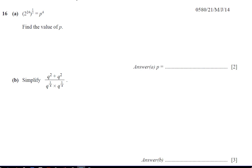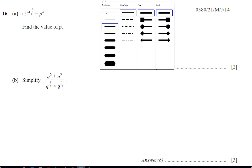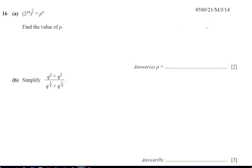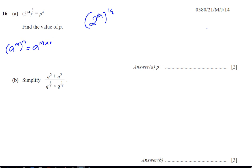First of all, let's just take the 2 to the power of 24 part. 2 to the power of 24, to the power of a half. One of the rules of indices is: if you have a number raised to a power and that whole thing is raised to another power, you multiply the powers. So here, you get 2 to the power of 24 times a half, which gives you 2 to the power of 12.